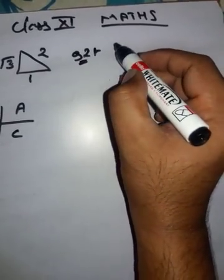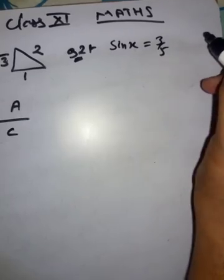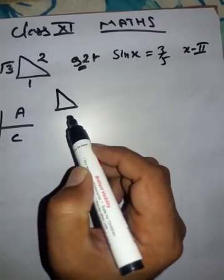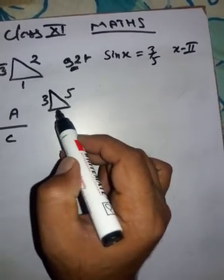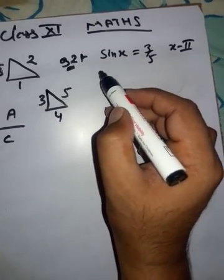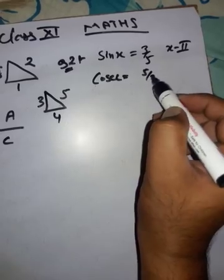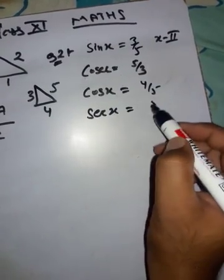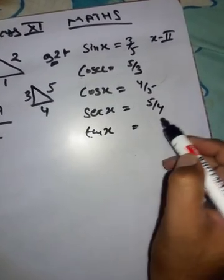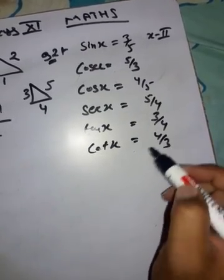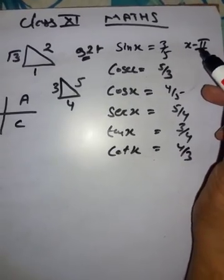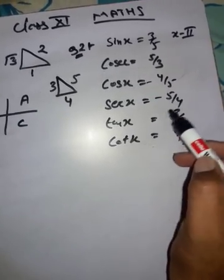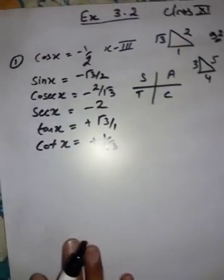Question 2: sin x = 3/5 and x lies in the 2nd quadrant. By the right triangle method, perpendicular = 3 and hypotenuse = 5, so base = √(25 - 9) = 4. The ratios are: cosec x = 5/3, cos x = 4/5, sec x = 5/4, tan x = 3/4, cot x = 4/3. In the 2nd quadrant, sin and cosec are positive; cos, sec, tan, and cot are negative.